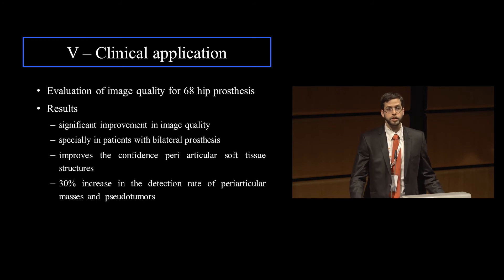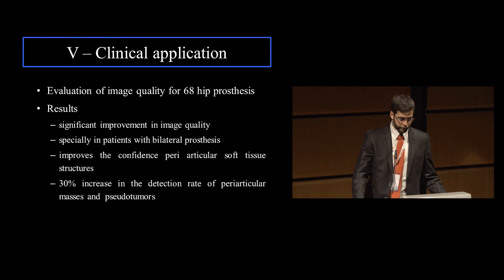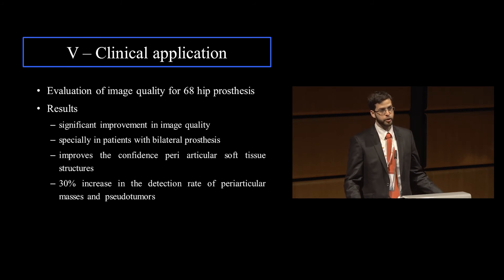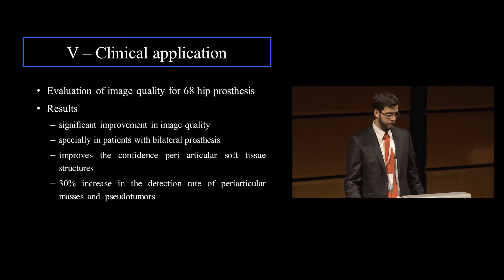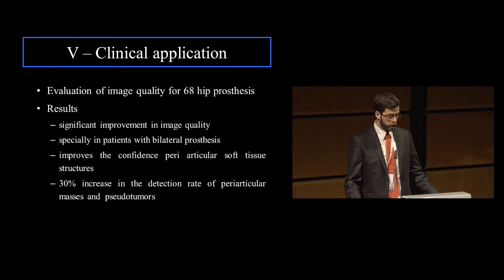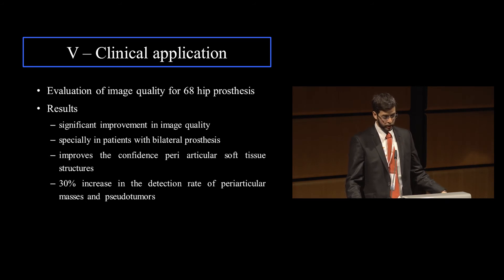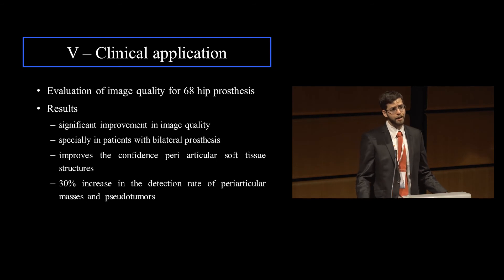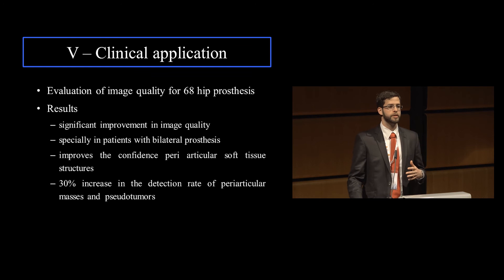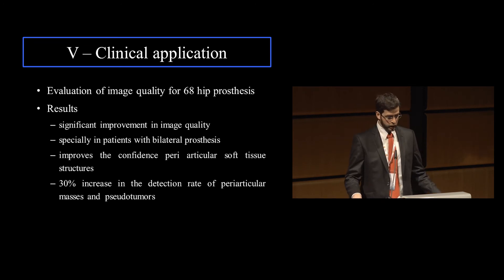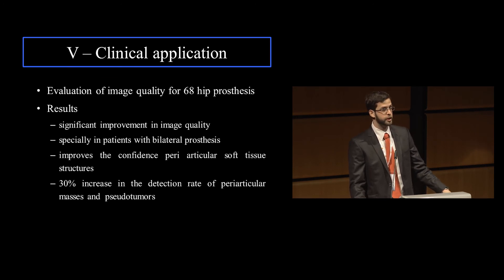We were very interested in this technique. The initial experience was very positive and we did our clinical evaluation protocol for this algorithm. We evaluated 68 hips, read by two readers — with iterative reconstruction only, and with the association of iterative reconstruction and CMAR. The results showed a significant improvement in image quality and very good reproducibility between both readers, about a 0.88 kappa value. It improved the confidence on the analysis of multiple periarticular soft tissue structures — gluteal tendons, sciatic nerve, iliopsoas tendon.